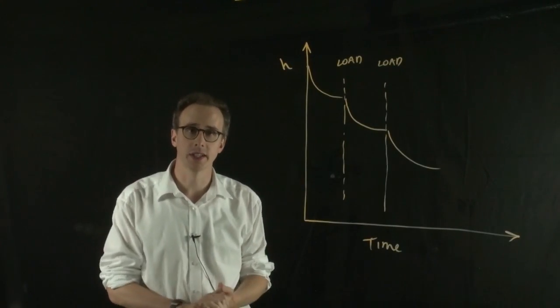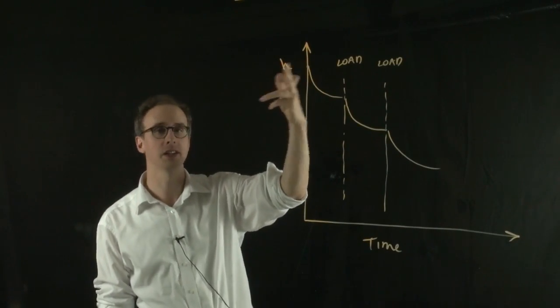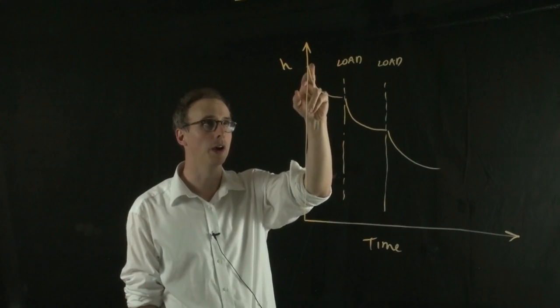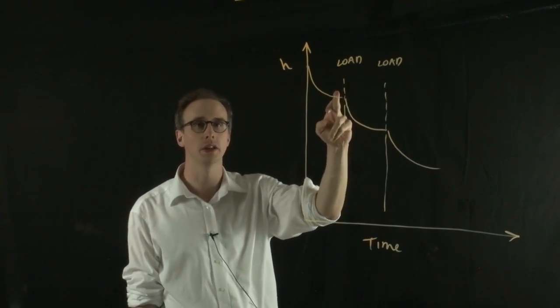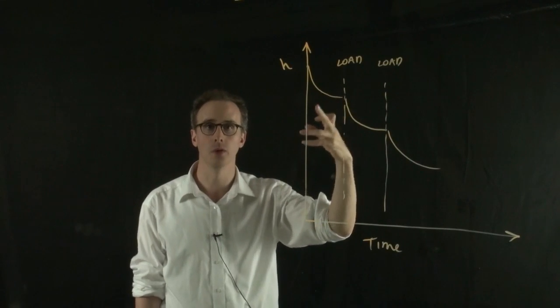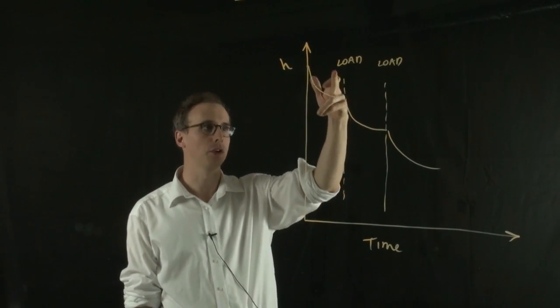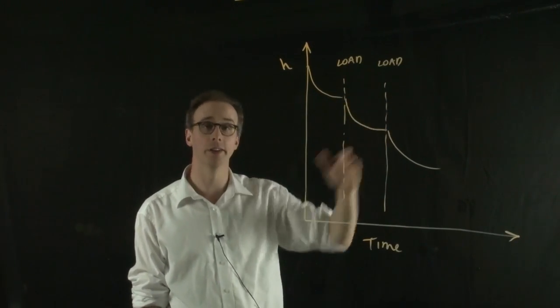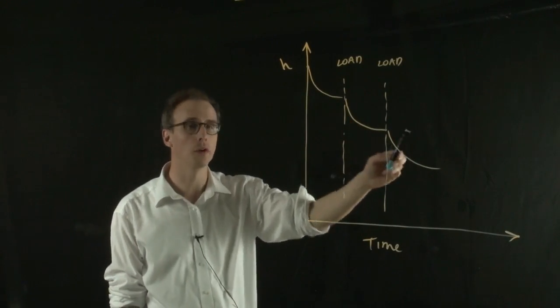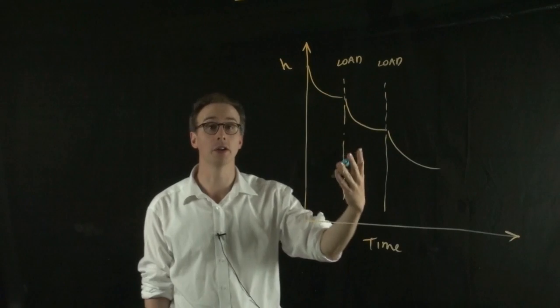So in an odometer test, we do a number of load increments. We start with an initial sample thickness, which is what the y-axis is, and time here. We put a load increment on, and we wait until it reaches an equilibrium. Usually it's 24 hours between loading increments. And then we add another load, and then another load. And you can see that you can do a root time method on all of these steps, and that will give you a different Cv value for each increment.